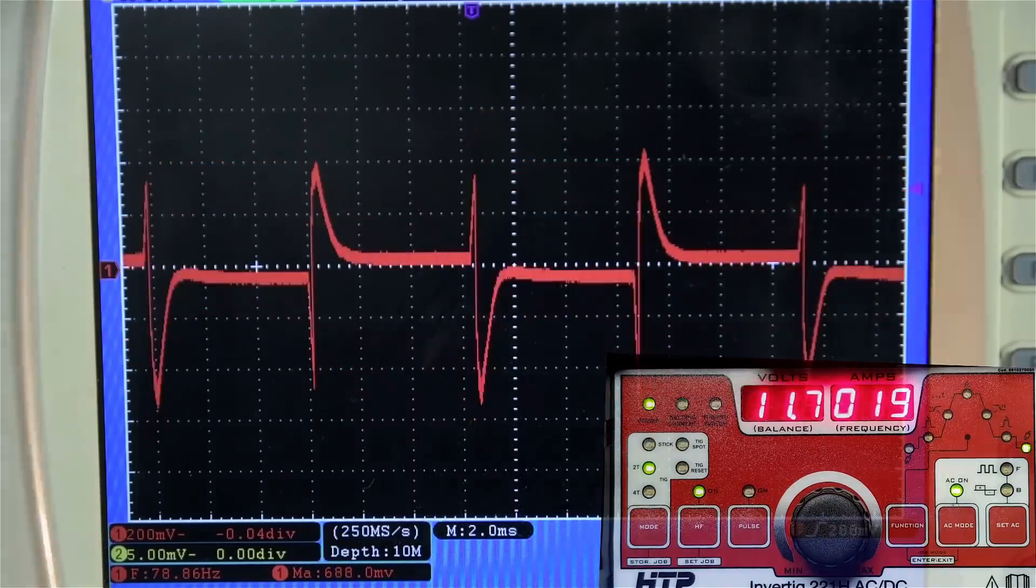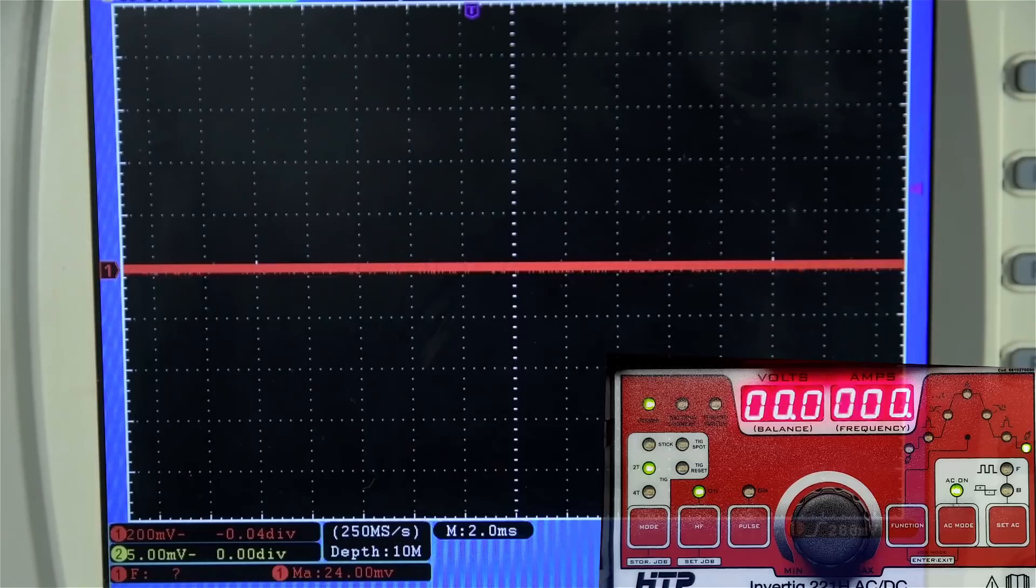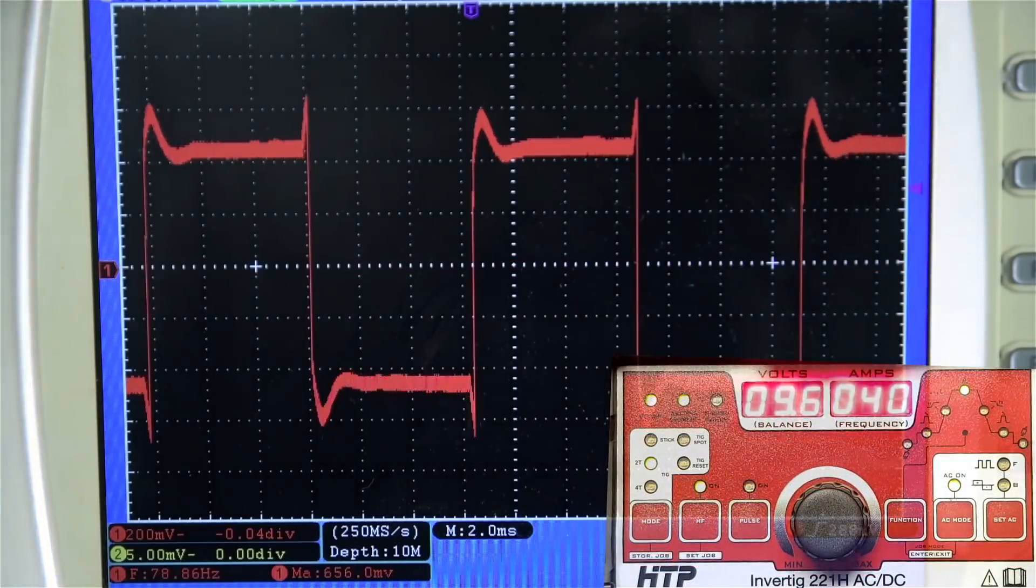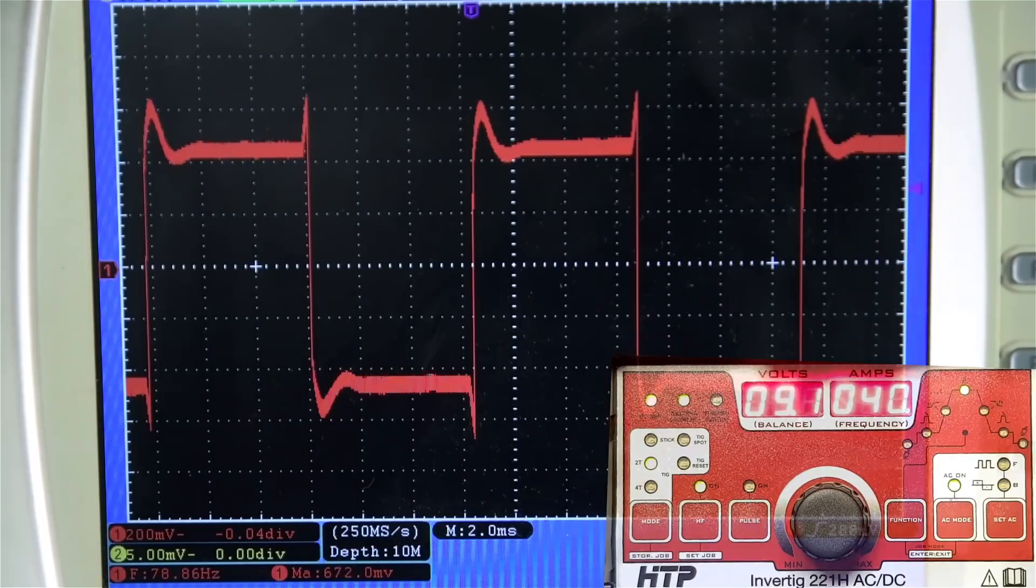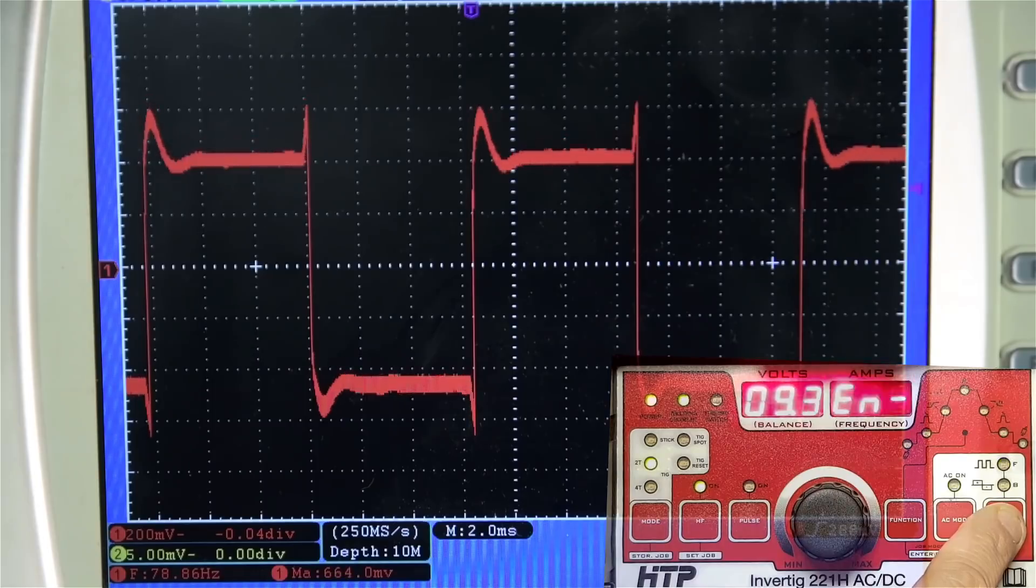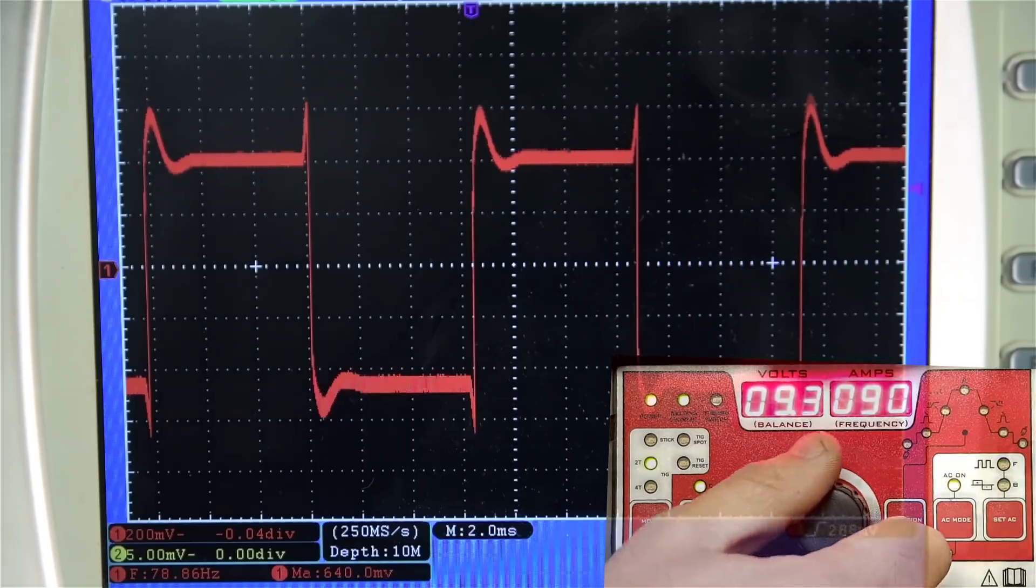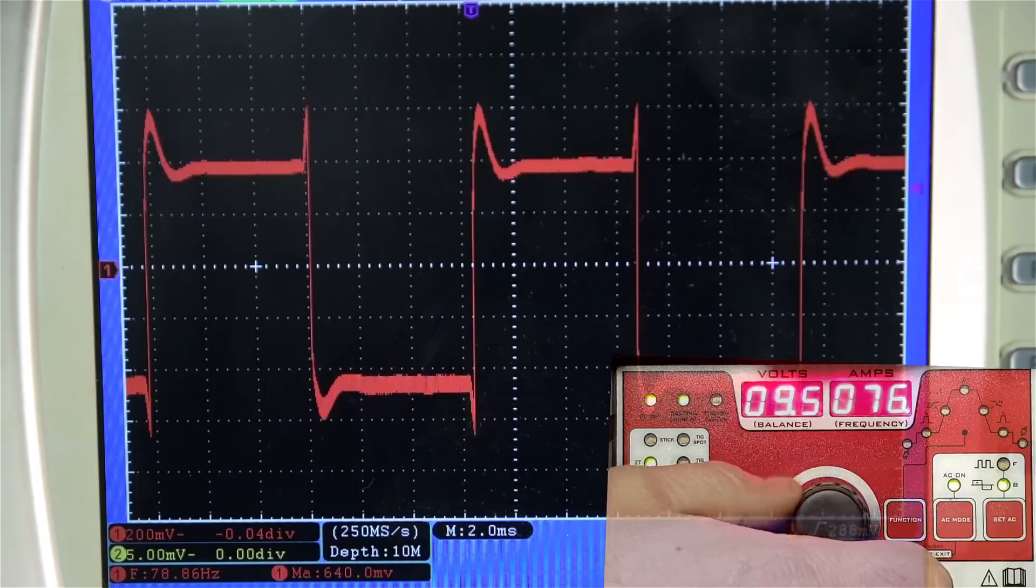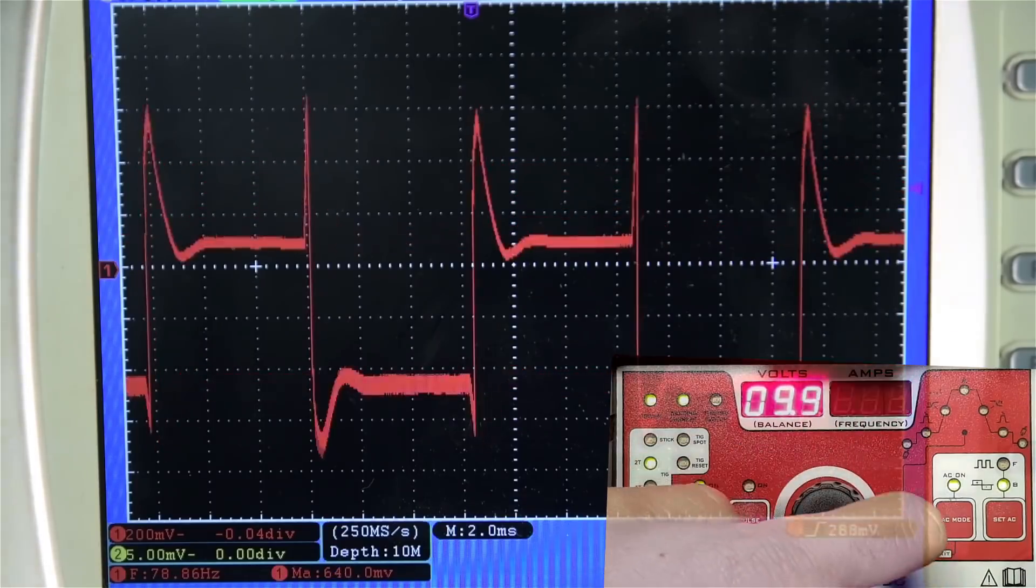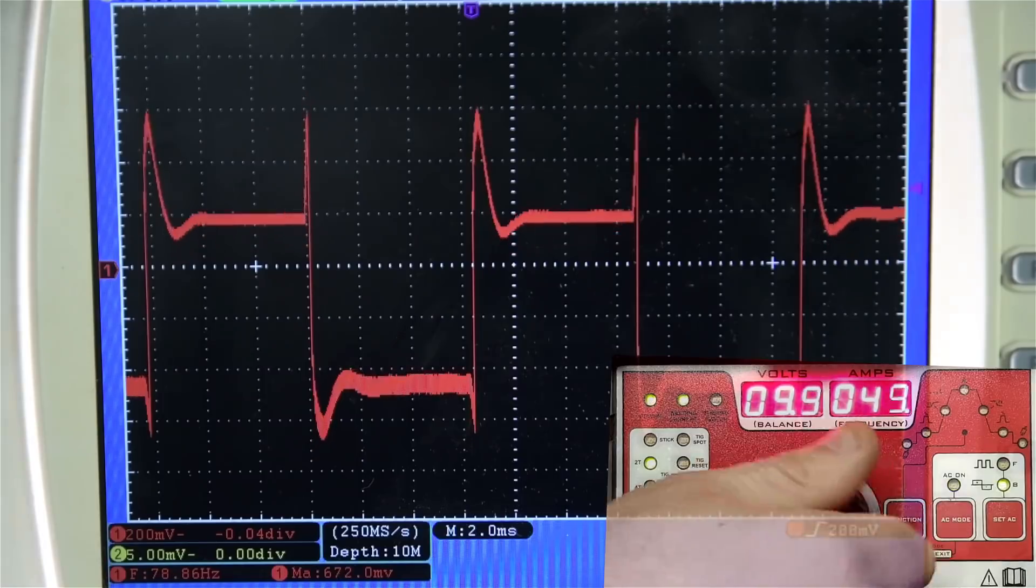And finally, the holy grail of what I was after, symmetry control. The HTTP adjusts symmetry independently, so you'll first see EN dash, or EN negative, show up on the menu for electrode negative. Again, my clamp is the wrong way around, so you're about to see the top of the waveform come down instead of the bottom come up. I just can't seem to do anything right.